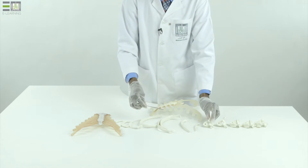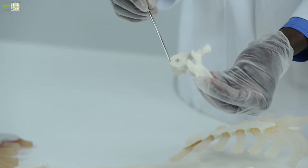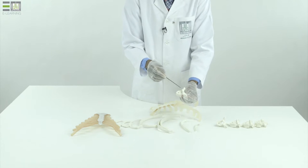And posteriorly, our thoracic cage is bounded by 12 thoracic vertebrae, articulates with each other.